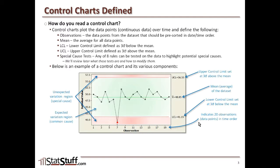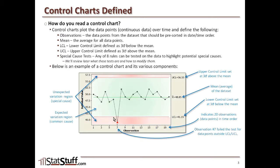In this example, we have 20 different observations or data points, all sorted in date-time order — that's why they're reflected from left to right within that time frame. We also have an example of a data point that falls outside of the expected variation region, falling within the unexpected variation region.